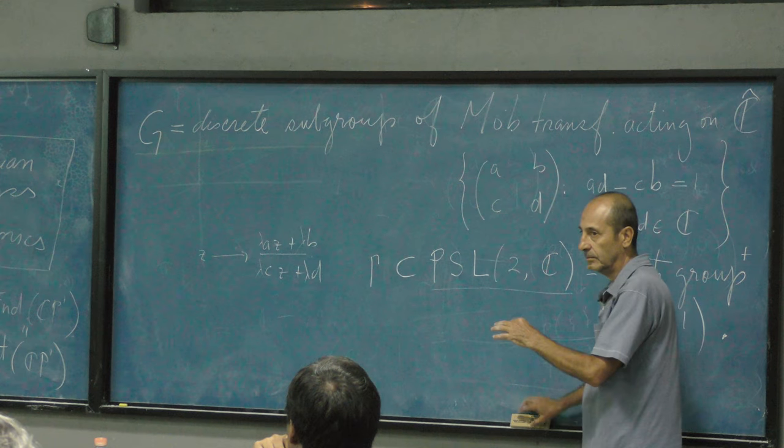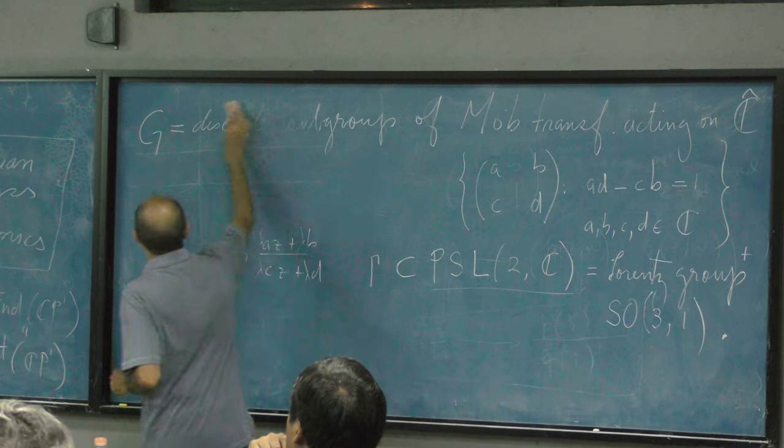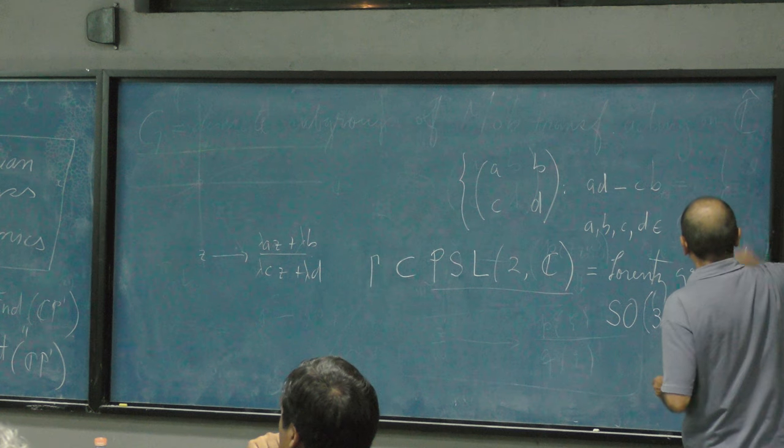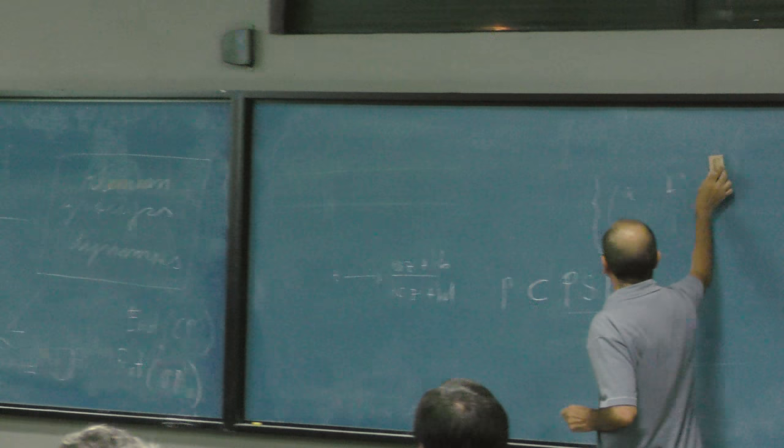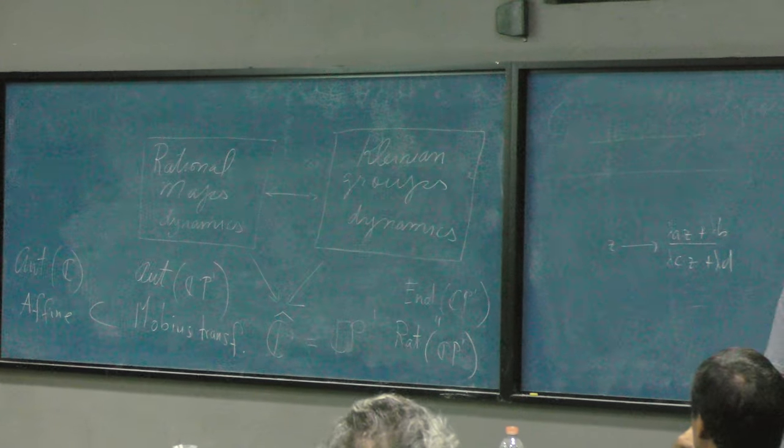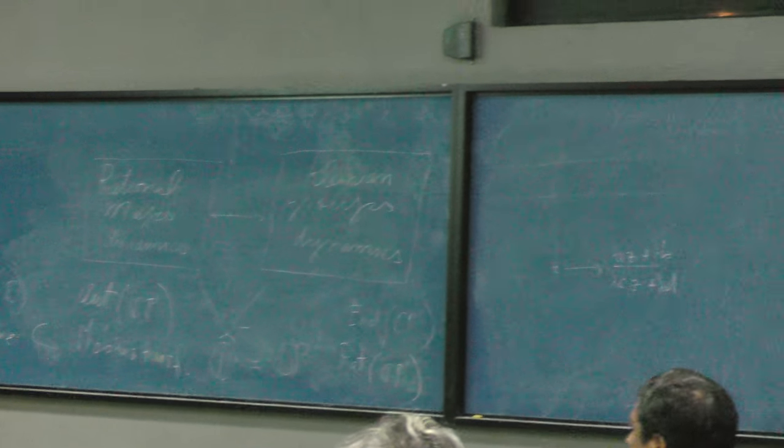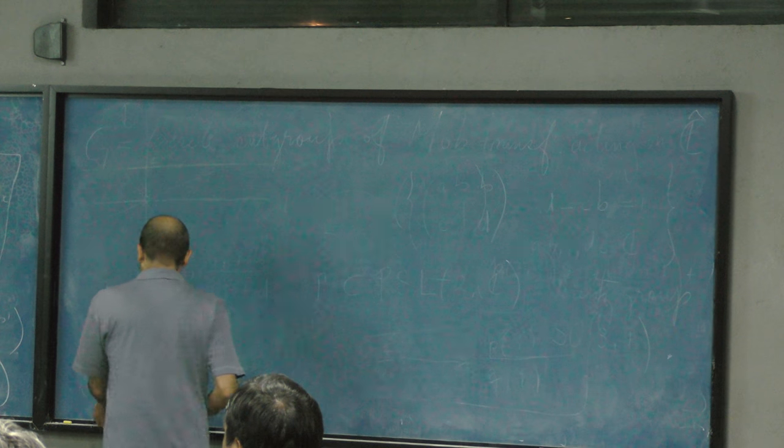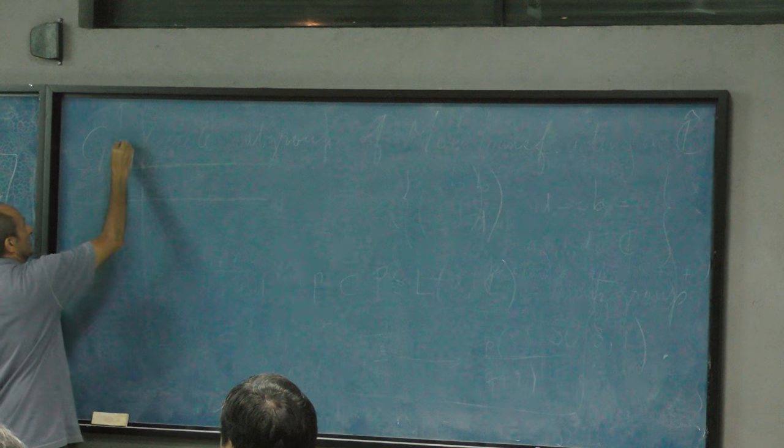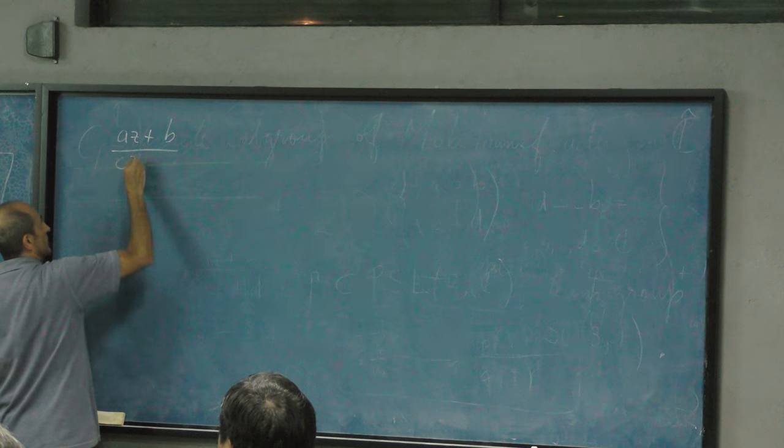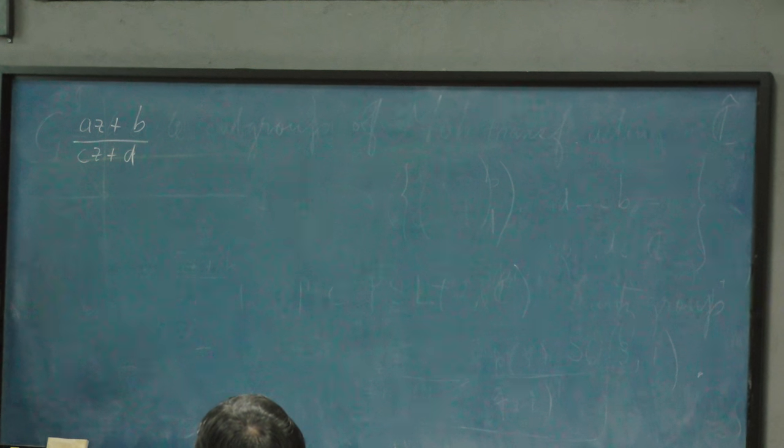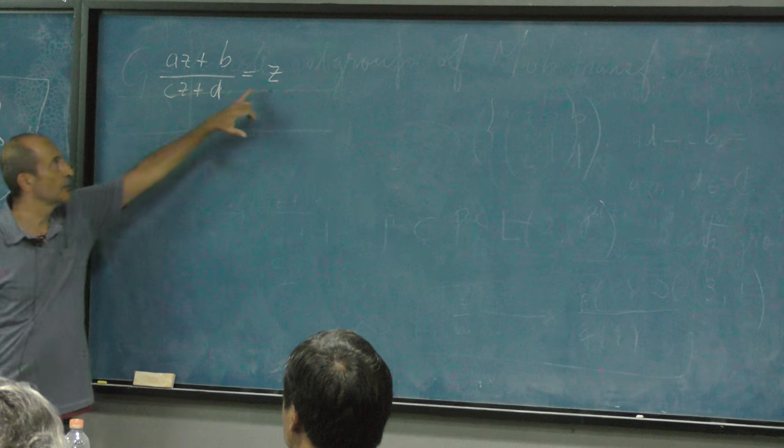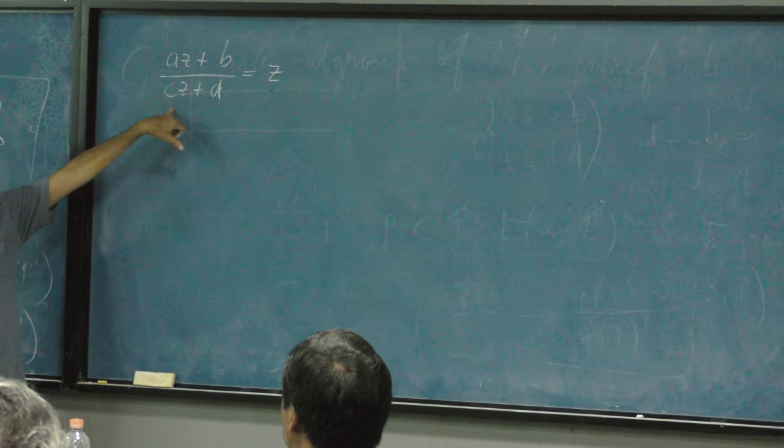And the topology is the topology of the coefficients. You move a little bit the coefficients, you move a little bit the points. And so, that's the topology. And you take subgroups which are discrete. So, this is like having points in this space. Well, in this group. So, I'm going to make an example to make it easier. So, Moebius transformations, as you know, are classified, and send circles to circles, and so on. They are conformal, preserve angles between tangent vectors.